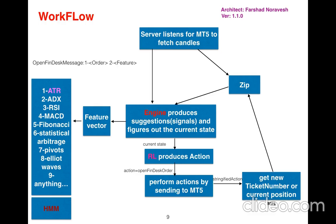We can update our workflow as follows: I put the Hidden Markov Model in the feature vector, because it behaves like any other indicator or Fibonacci technique — it is an alternative. When we include the Hidden Markov Model as a feature vector, we pass it to the Reinforcement Learner to produce an action. This workflow shows how I integrate different machine learning algorithms into a single unified workflow.